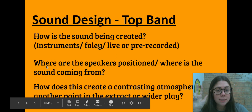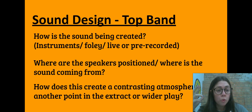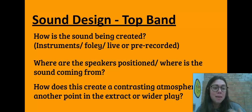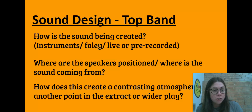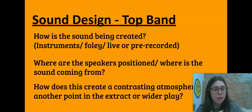And finally, how does this create a contrasting atmosphere to another point in the extract or the wider play? For example, if you decided to have some soft classical music in a major key playing in the opening scene, that could contrast with later in the play where maybe the same song is played in a minor key, to show that things aren't as happy as they were at the beginning.